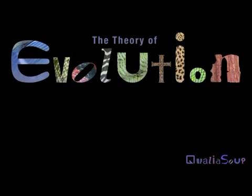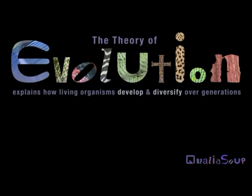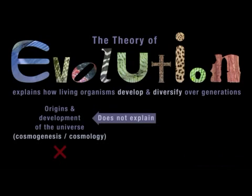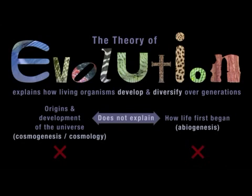The Scientific Theory of Evolution explains how lifeforms develop and diversify over generations. Something to understand straight away is that it doesn't claim to explain the development of the universe or how life was first begun. It explains how new varieties of lifeform emerge from earlier lifeforms.